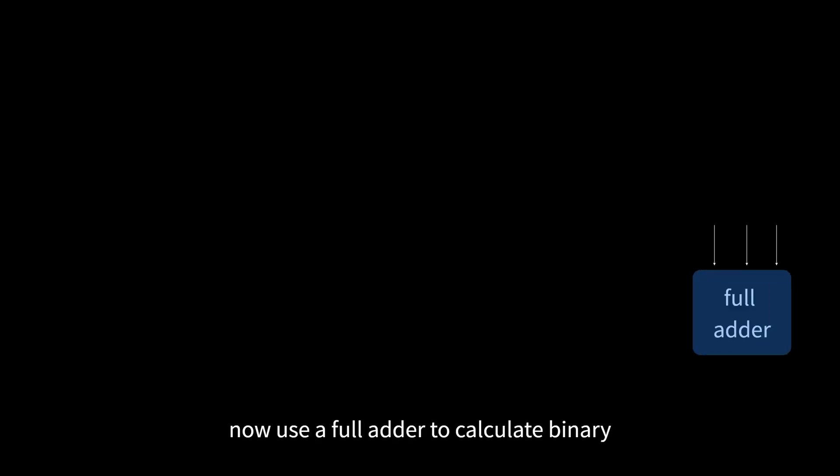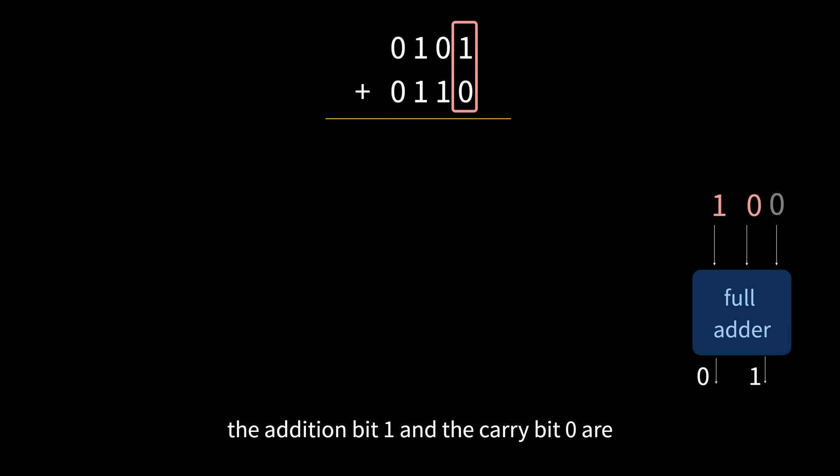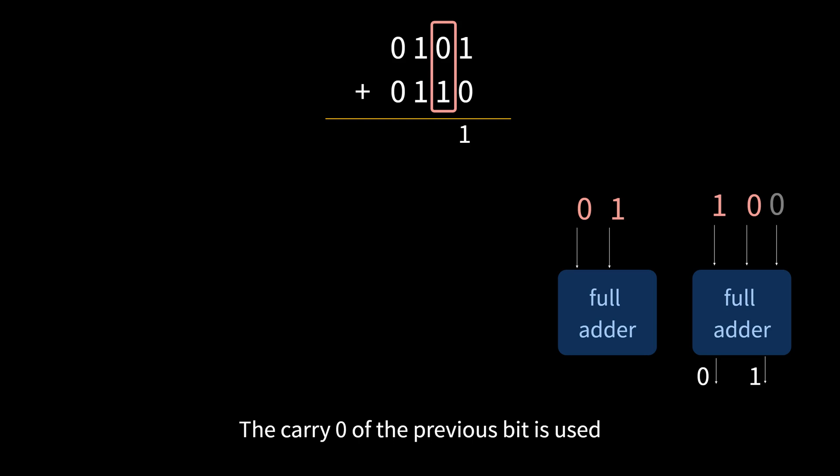This is the full adder. Okay, now use the full adder to calculate binary addition. First, calculate the first column from the left, take 1 and 0 as input. There is no carry here, so the carry input is 0. Then, the addition bit 1 and the carry bit 0 are output. Then there is the second column, and another full adder. The carry 0 of the previous bit is used as one of the inputs, and then output.